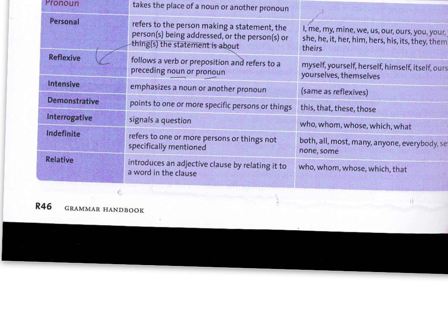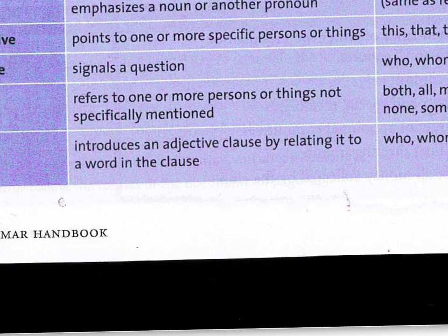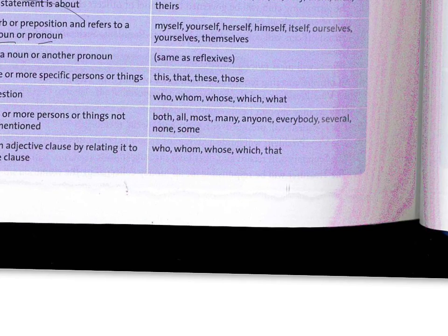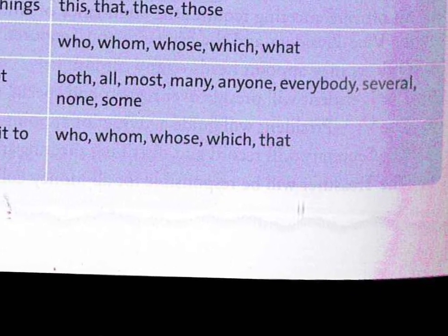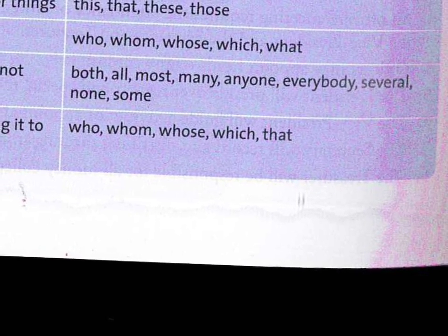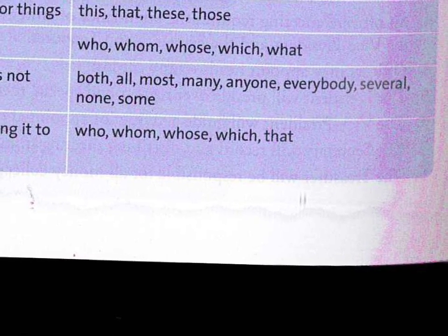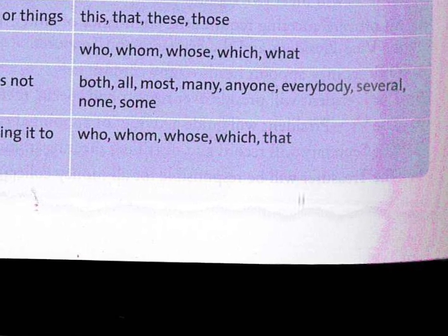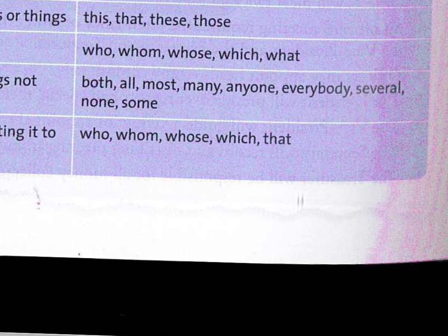An indefinite pronoun is not definite — it's not specifically clear who or what you're talking about. Examples include: both, all, most, many, anyone, everyone, several, none, some. You have to look at the rest of the sentence or surrounding sentences to understand what the pronoun refers to, because it's indefinite — it's not clear.